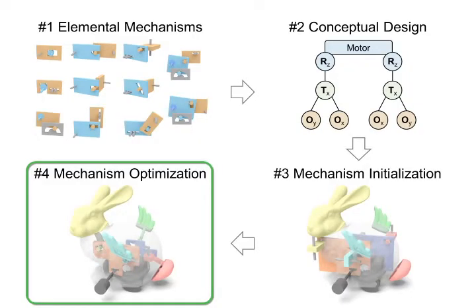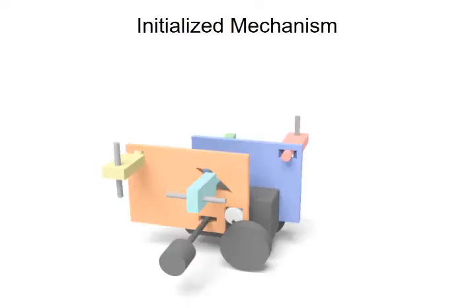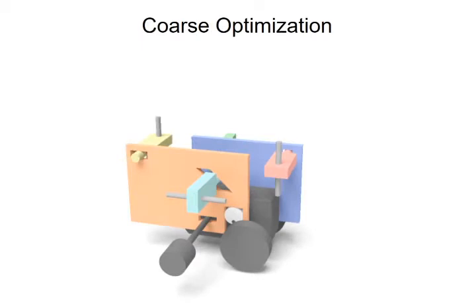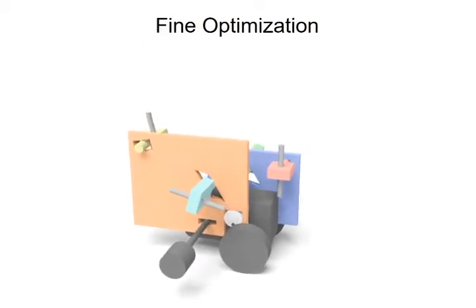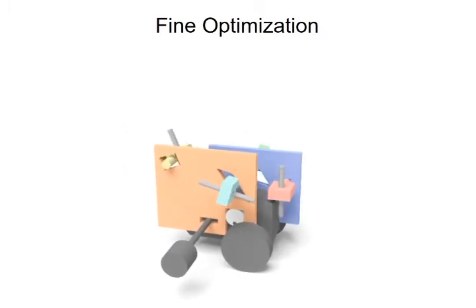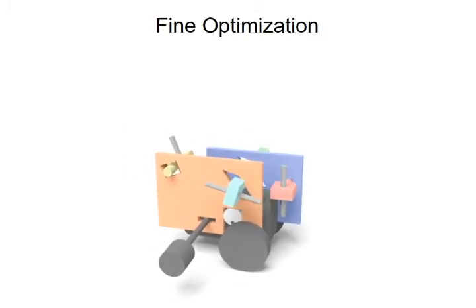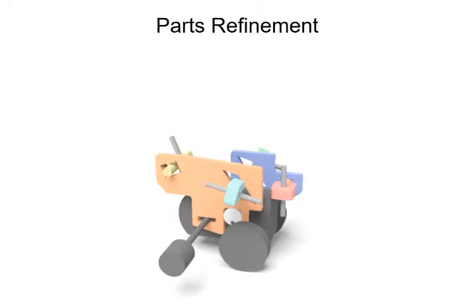Finally, the mechanism optimization. We optimize the geometry of the wind-up mechanism in a coarse-to-fine manner, aiming to compact the mechanism, avoid parts collision, and make the end-effectors better follow prescribed motions.